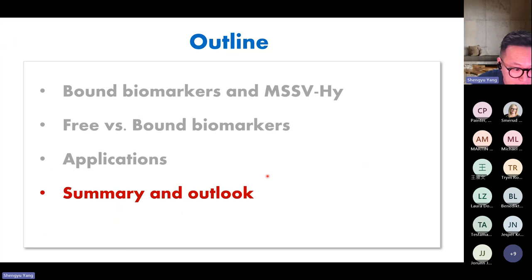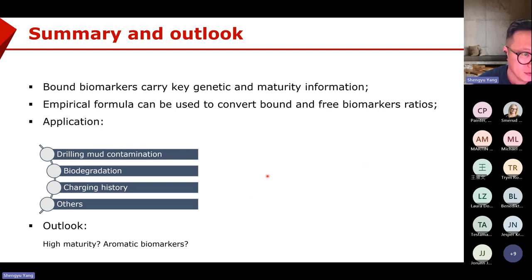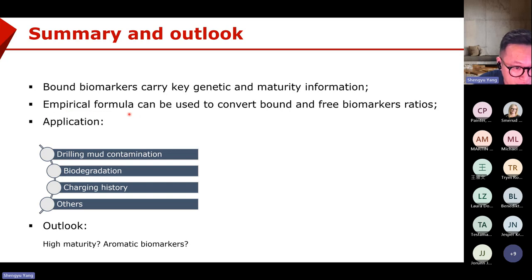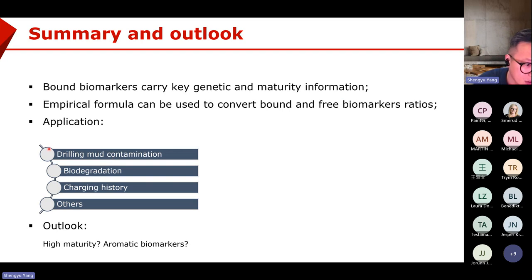I think I've spent about half an hour. Let's come to a very brief summary and outlook. Bond biomarkers and free biomarkers are different but also very similar — they show a lot of similar characteristics. Bond biomarkers carry key genetic and maturity information. We can use empirical formulas to convert bond biomarker ratios to free biomarker ratios when we don't have free biomarkers. Possible applications include drilling mud contamination, biodegradation, and charging history research.